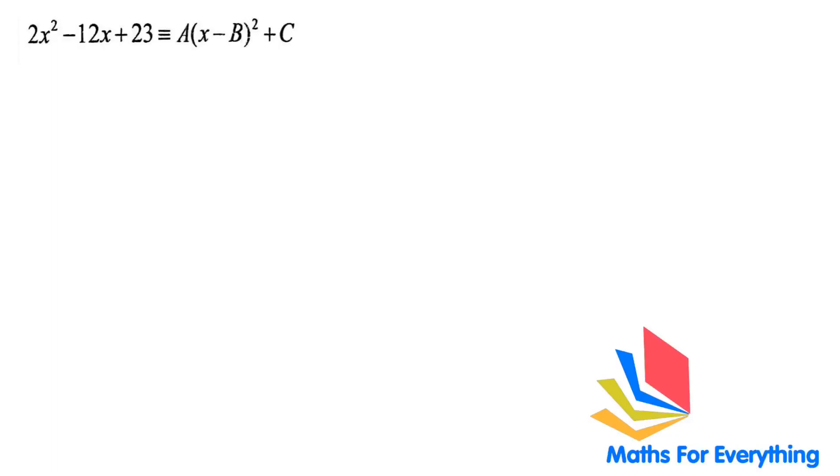If you have (x - b) times (x - b), when you multiply x with x, you will get x², x with negative b is negative bx. Then this negative b with x is negative bx.